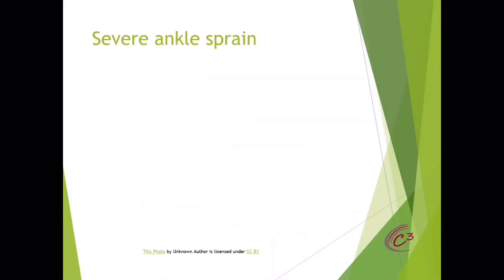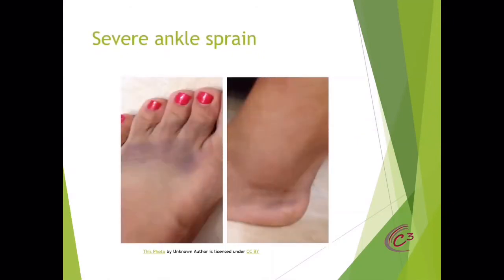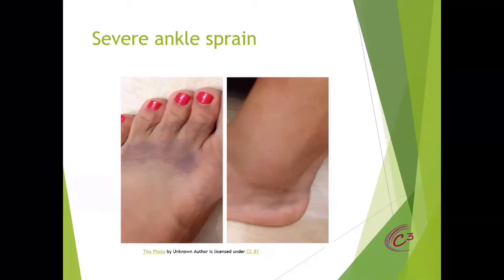A severe ankle sprain — look how the ankle is swelling here and the purple discoloration. The sprain was so severe that not only did it tear the ligaments, it also tore the blood vessels. You had bleeding in the foot that tracked distally and collected by the toes. When you have this amount of bleeding and swelling — from here down in the calcaneus to the toes — that indicates a severe ankle sprain, which can be somewhat problematic in the long term.